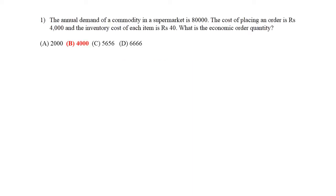Here is a question that appeared in the 2015 Indian Engineering Services exam: the annual demand of a commodity in a supermarket is 80,000, the cost of placing an order is rupees 4,000, and the inventory cost of each item is rupees 40. What is the economic order quantity? I have marked option B — 4,000 — in red as the correct answer.